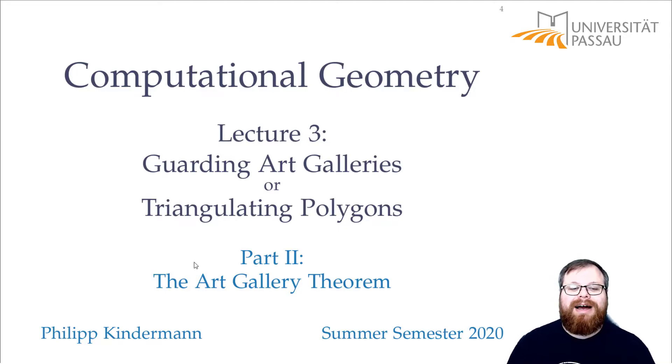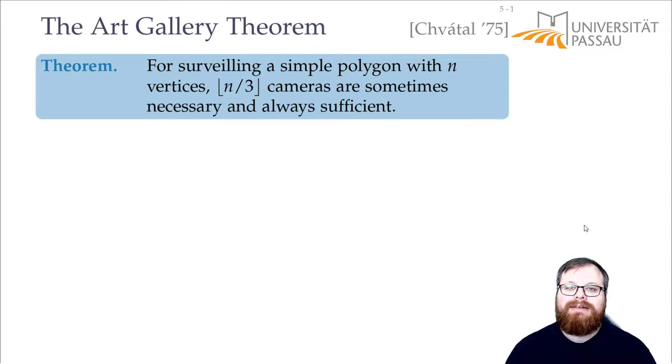In this part I will present you the Art Gallery Theorem. This is a very fundamental result by Chvátal from 1975. And this theorem says, if we want to surveil a simple polygon with n vertices, then ⌊n/3⌋ cameras are sometimes necessary and they are always sufficient.